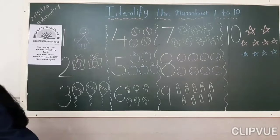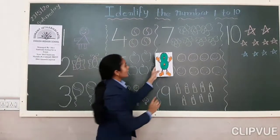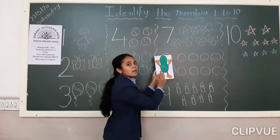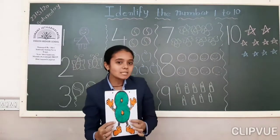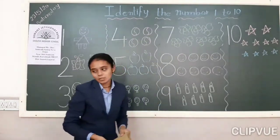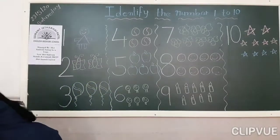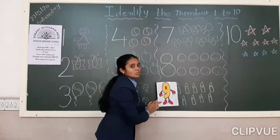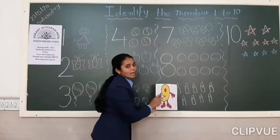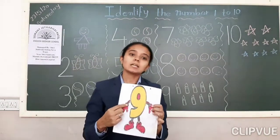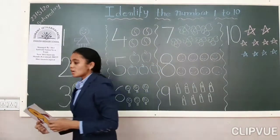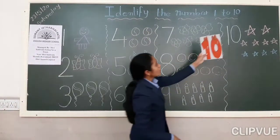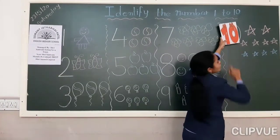After 7, which number will come? 8. Which number is this? 8. After 8, which number will come? 9. Which number is this? 9. After 9, which number will come? 1, 0, 10.